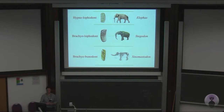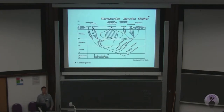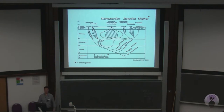Elephas is the genus that includes the extant Asiatic elephant. This is just how the genera are placed in the family tree of proboscideans. I could go on longer about proboscidean phylogeny, but that will take another talk, so let's carry on.